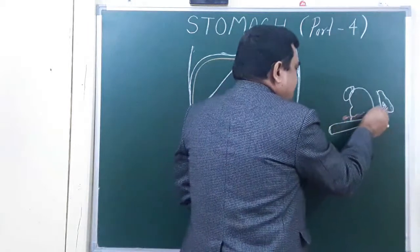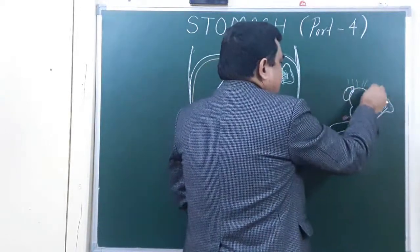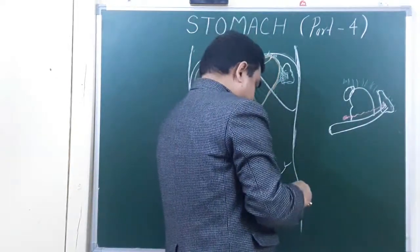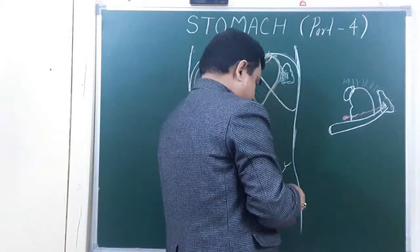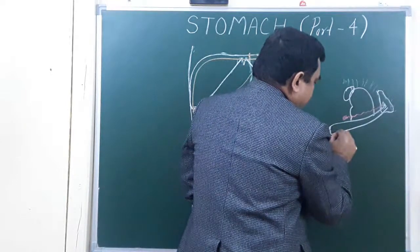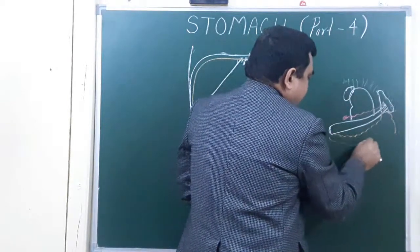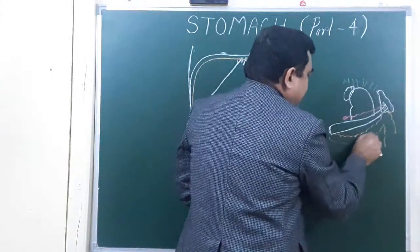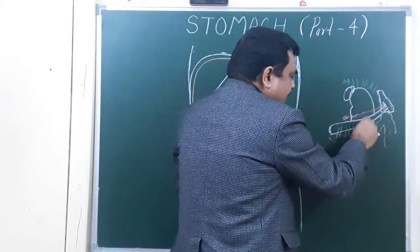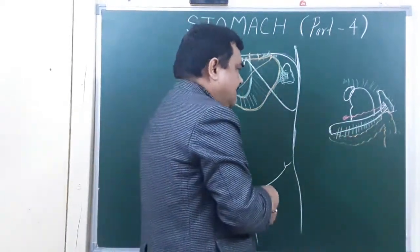This is the splenic artery. And here lies diaphragm. Here is the position of transverse colon. This is the transverse colon. All these structures form the stomach bed.